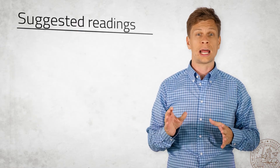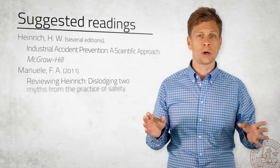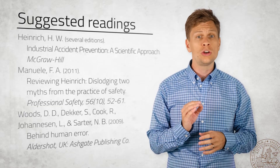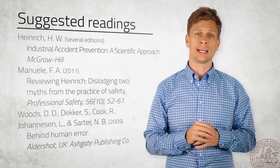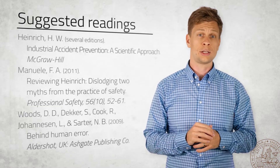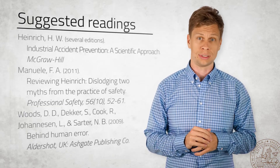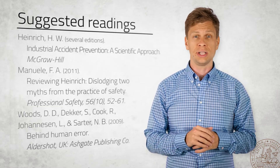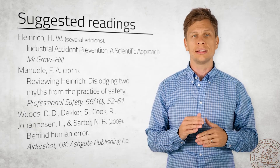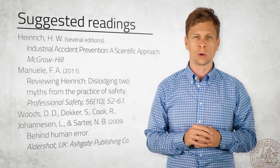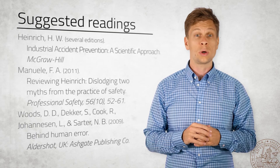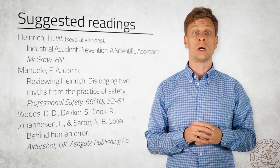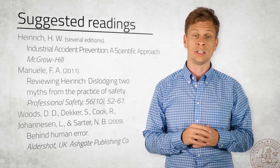Accidents can happen when all components and actors are working as intended, and even when they are not working as intended, accidents typically do not happen. We must understand the interactions and relations between the system actors and components to understand how accidents happen, as well as how safety is guaranteed.